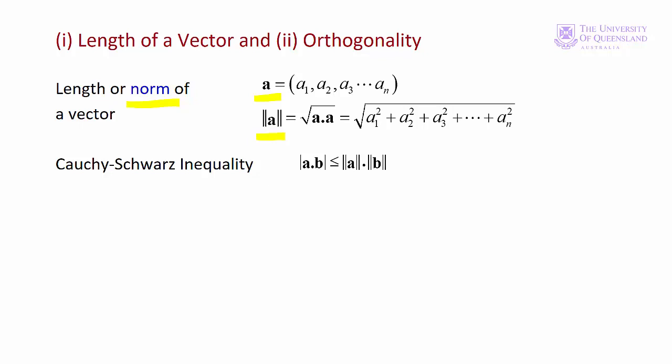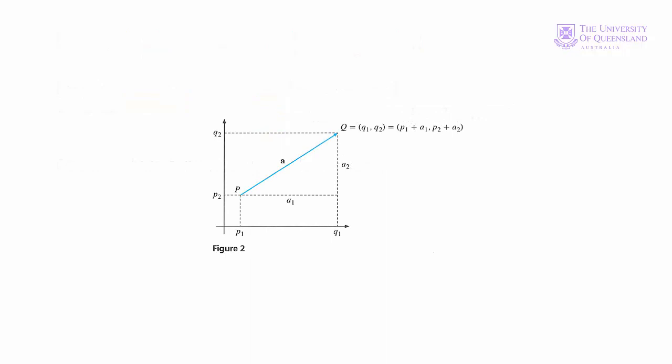If we go back to the geometric interpretation of a vector, we can see where this comes from. Let's consider a vector in the XY plane. As we saw the vector represents movement of A1 in the X direction and A2 in the Y direction. So we have a triangle with the base A1, a height A2, and a hypotenuse the length of the vector A. We can apply Pythagoras theorem.